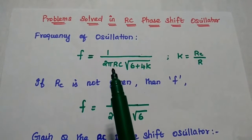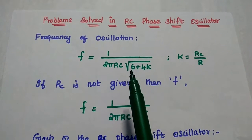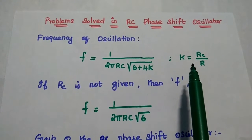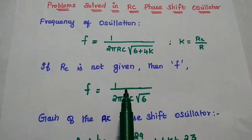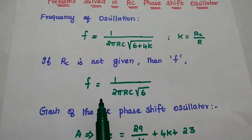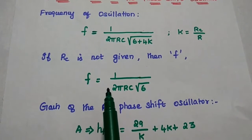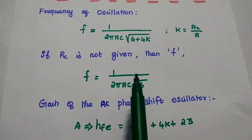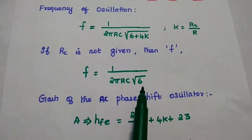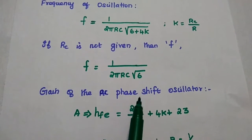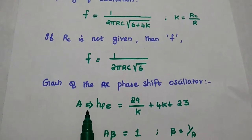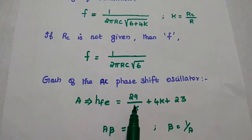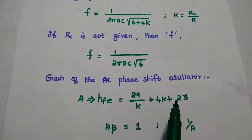Frequency of oscillation F is equal to 1 by 2 pi RC into square root of 6 plus 4K, where K is equal to RC by R. If RC value is not given in the problem, then the frequency can be calculated using the formula F is equal to 1 by 2 pi RC square root of 6.